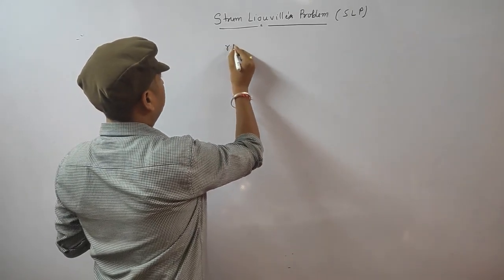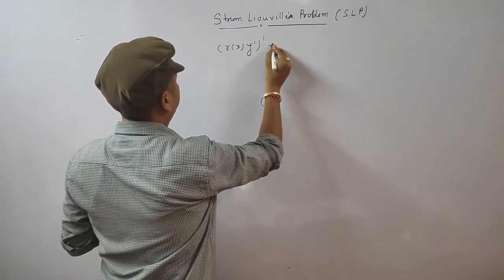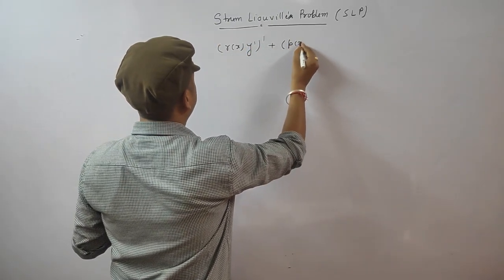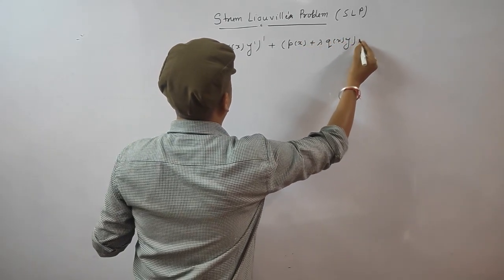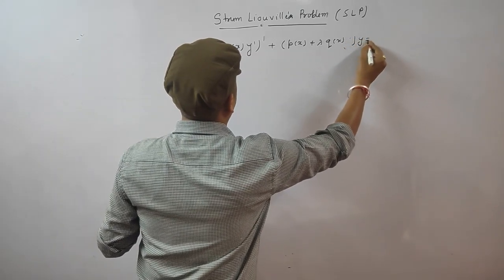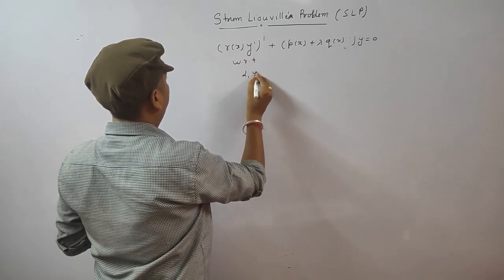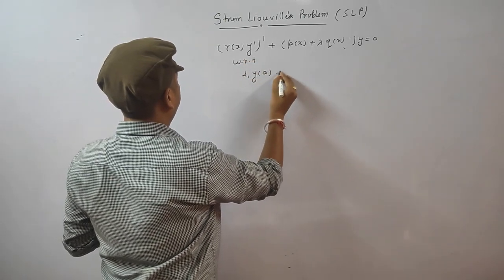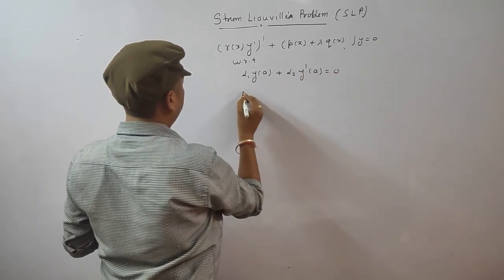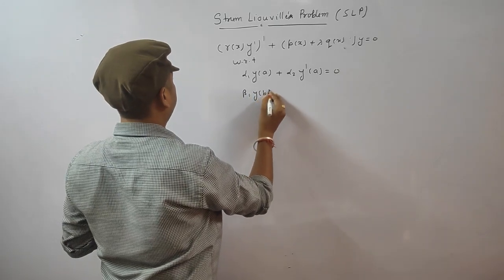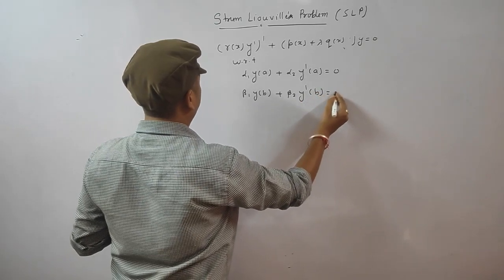The Sturm-Liouville Problem is of the form: [r(x)y']' + [p(x) + λq(x)]y = 0, with boundary conditions α₁y(a) + α₂y'(a) = 0 and β₁y(b) + β₂y'(b) = 0.